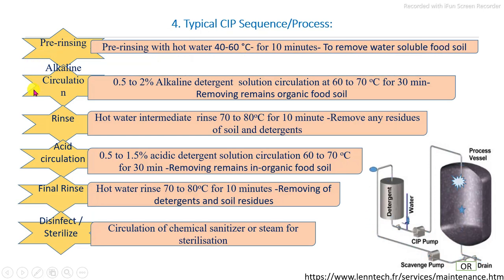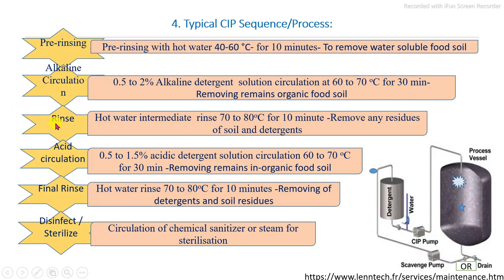The next step after pre-rinsing is the alkaline cleaning process using caustic soda solution at 0.5 to 2 percent concentration, at 60 to 70 degrees Celsius, circulated continuously for 30 minutes to remove remaining organic soils present on the internal processing line. After that, an intermediate rinsing with hot water at 70 to 80 degrees Celsius for 10 minutes removes residual food soils.